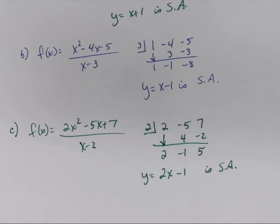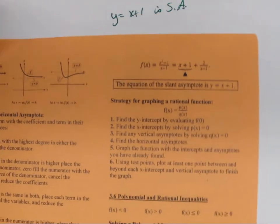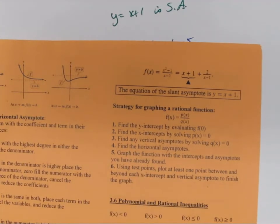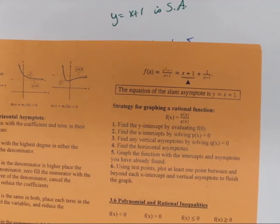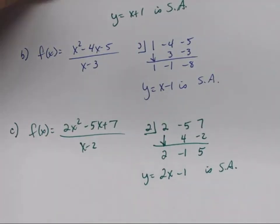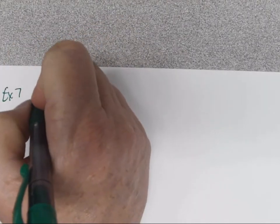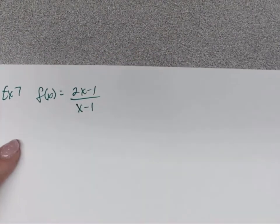Now let's talk about graphing rational functions — this is one of the bigger problems on your exam. The strategy is: find the y-intercept, find the x-intercepts, find the vertical and horizontal asymptotes (we won't graph slant asymptotes), then use test points to fill in the graph. Let's pull up a fresh sheet. Example 7: f(x) = (2x-1)/(x-1).